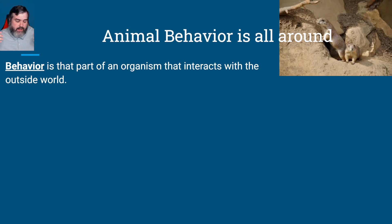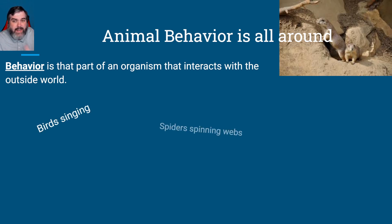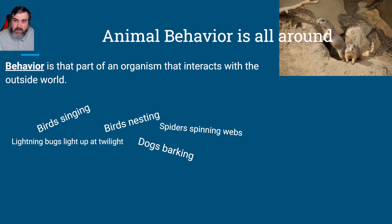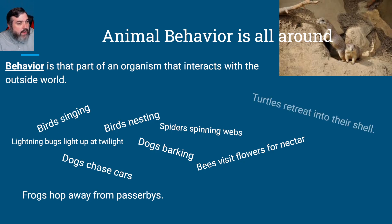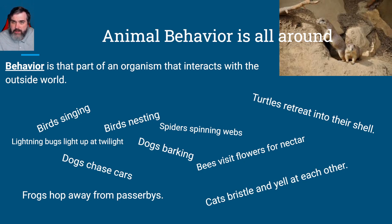Animal behavior is all around us. Behavior is part of an organism that interacts with the outside world. If you listen, you'll hear birds singing. You'll see spiders spinning webs, birds nesting, dogs barking, lightning bugs lighting up at twilight, bees visiting flowers, dogs chasing cars, frogs hopping away from passersby, turtles retreating into their shells, and cats yowling at each other. All of these are things that animals do.